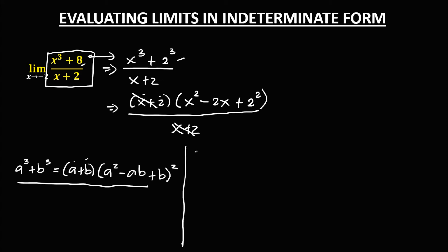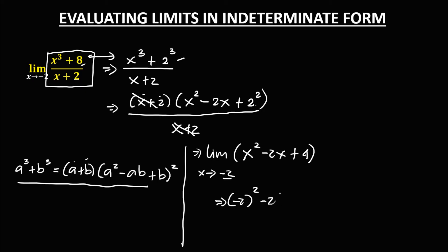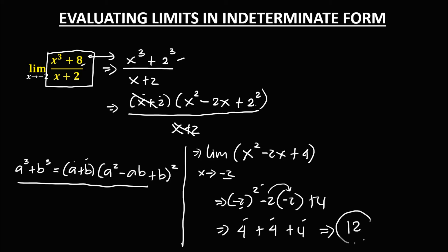The new equation is the limit of x squared minus 2x plus 4 as x approaches negative 2. Substituting x = -2, we get (-2) squared minus 2 times (-2) plus 4. Simplifying: (-2) squared is positive 4, and -2 times -2 is positive 4. So we have 4 plus 4, which is 8, and 8 plus 4. Therefore, the limit is equal to positive 12.